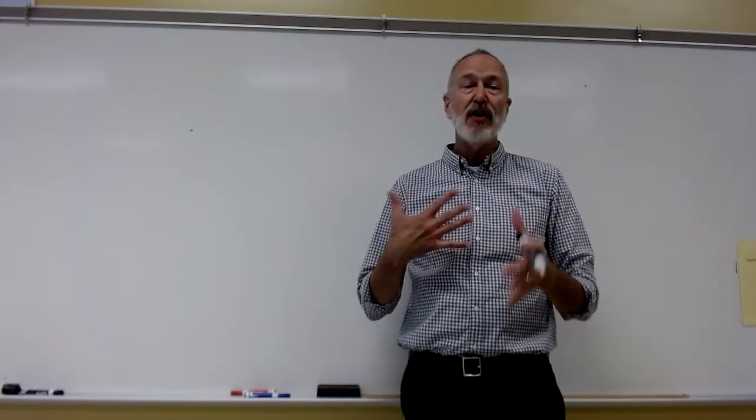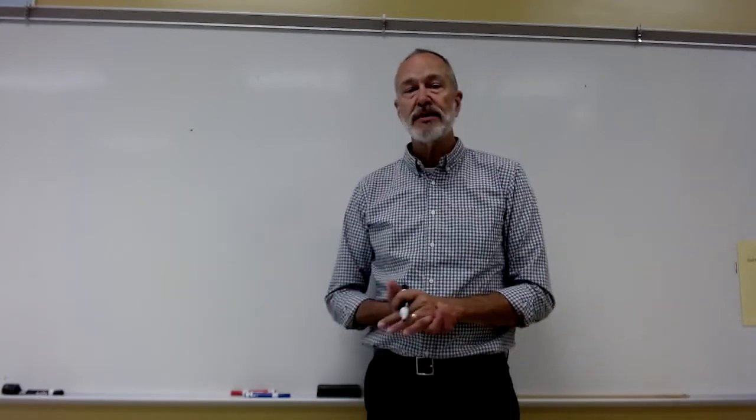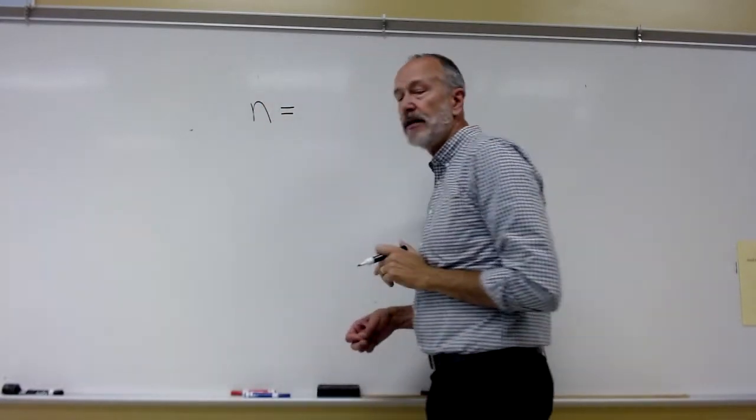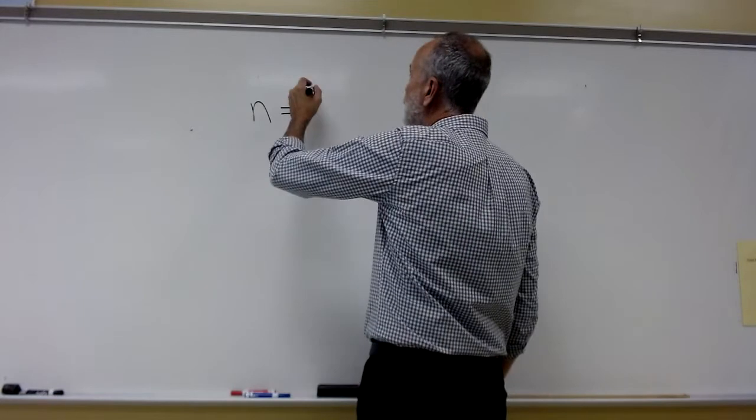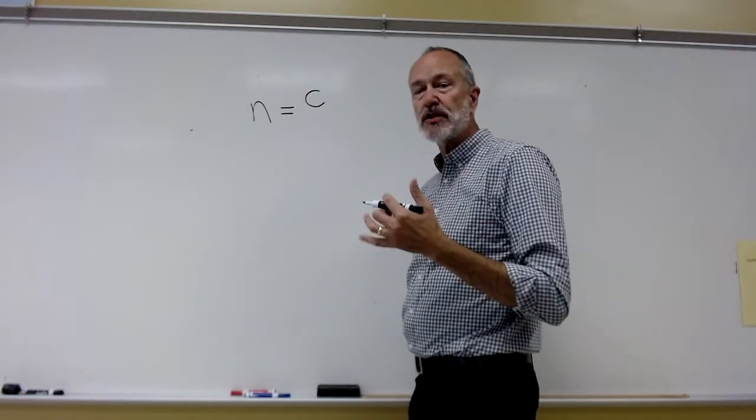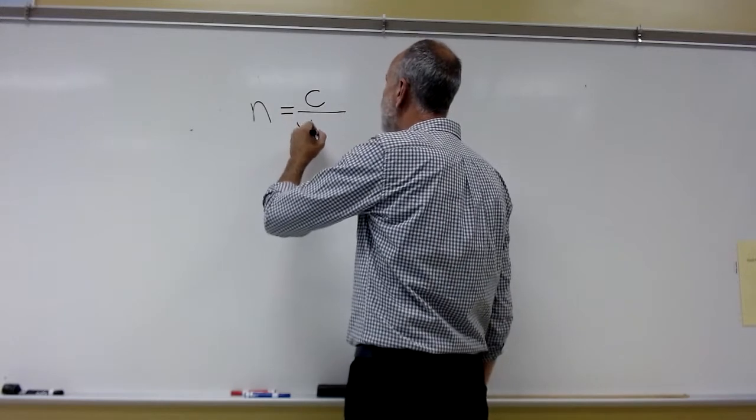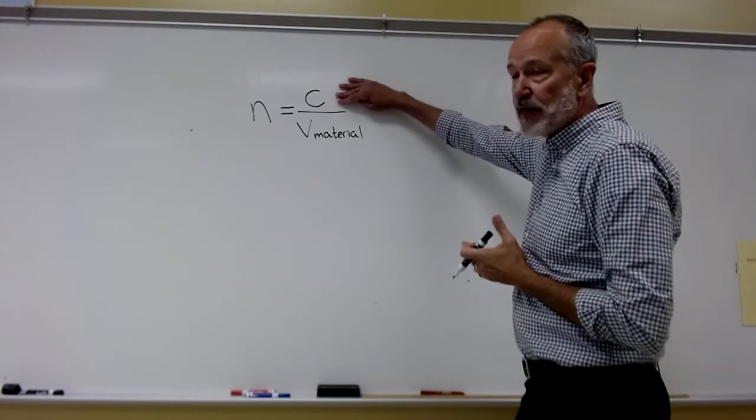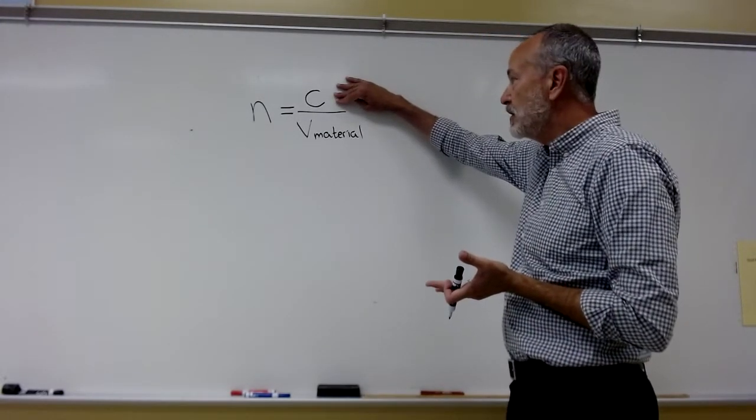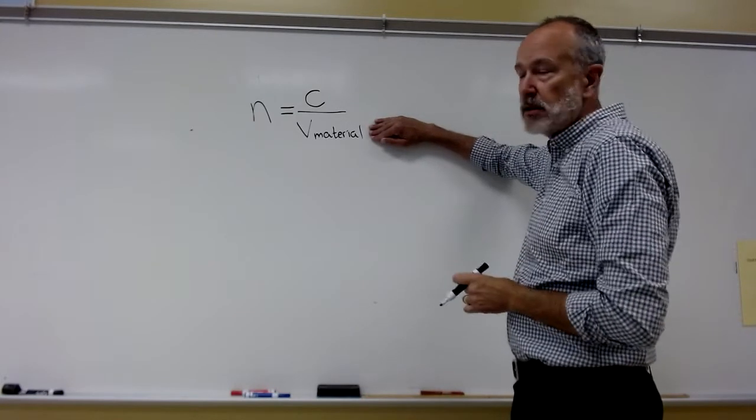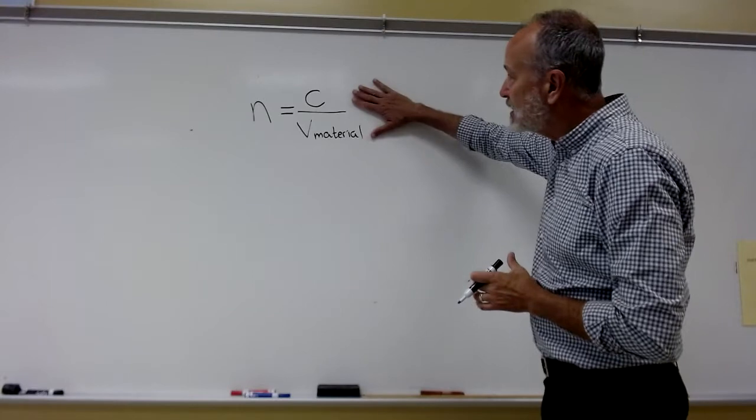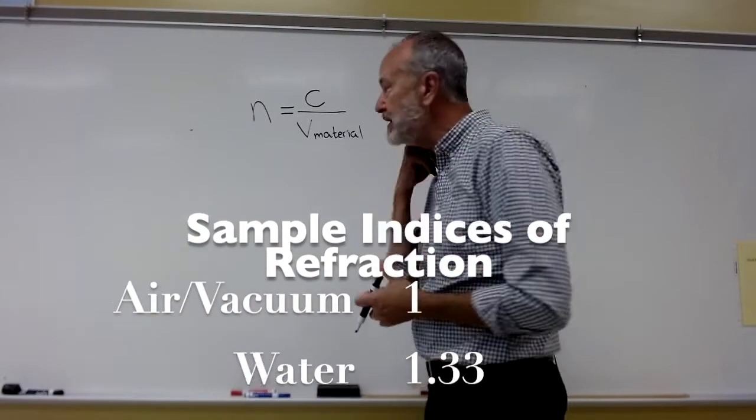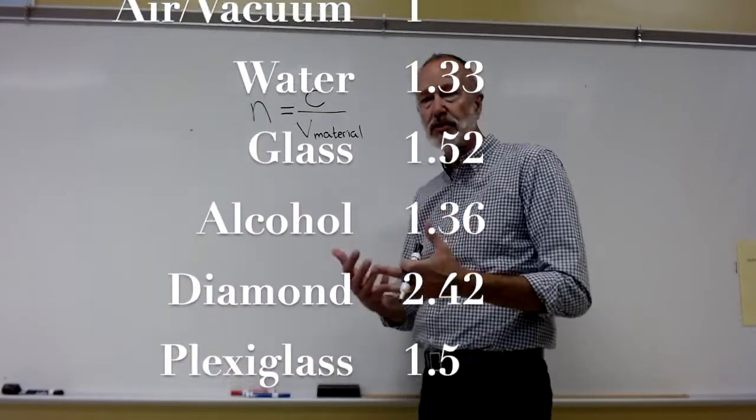To characterize how fast light travels in a material, we're going to use a thing called the index of refraction, n. And the index of refraction is the ratio of the speed of light in a vacuum to the speed of light in the material we're interested in. So this is as fast as anything can go, 3 times 10 to the 8th. This is going to be slower or equal. So at the very least, this has to be 1. It's generally going to be more than 1, 1 point something, 2 point something, maybe possibly 3 point something for the materials we're talking about.